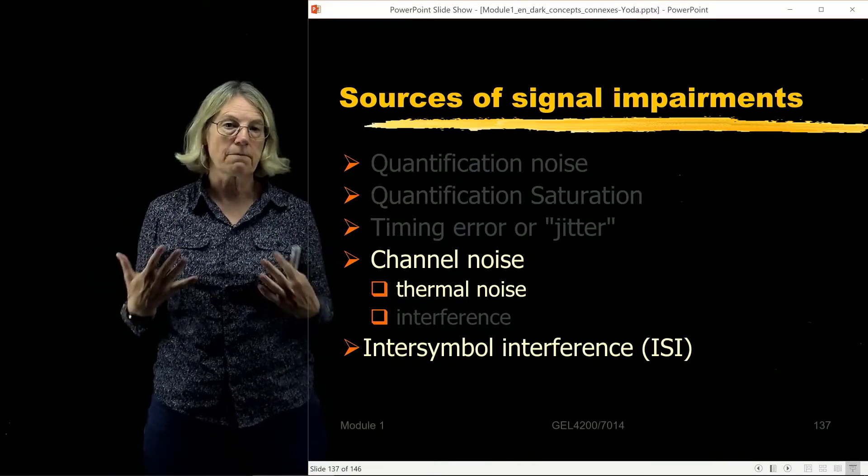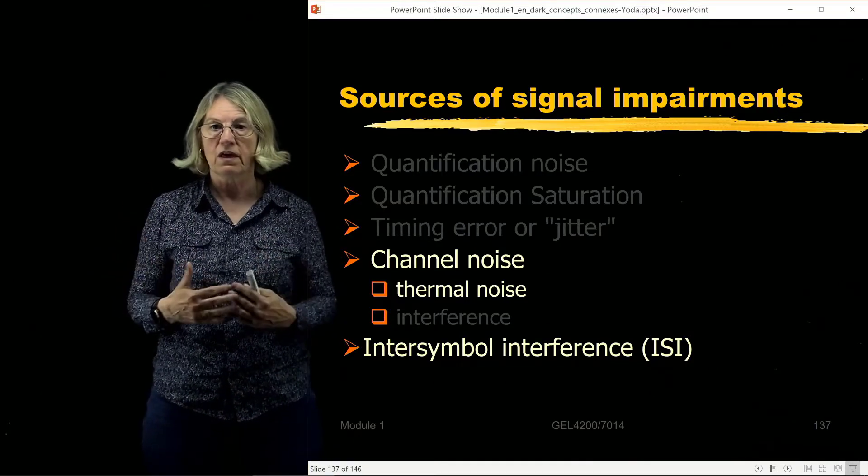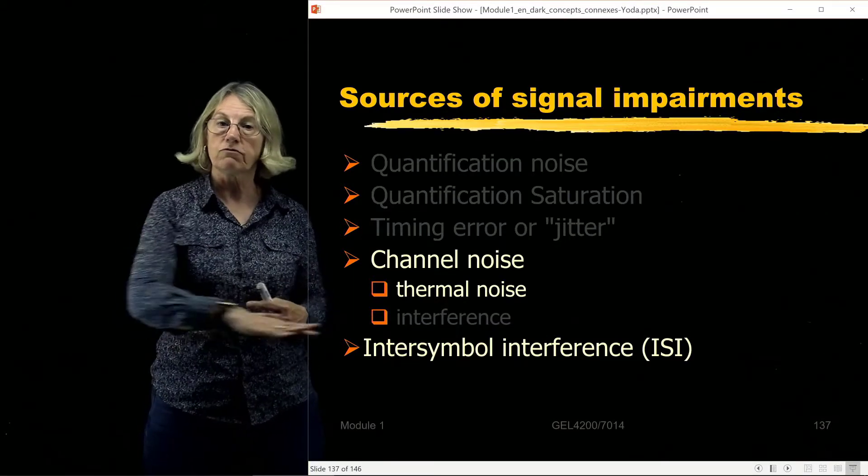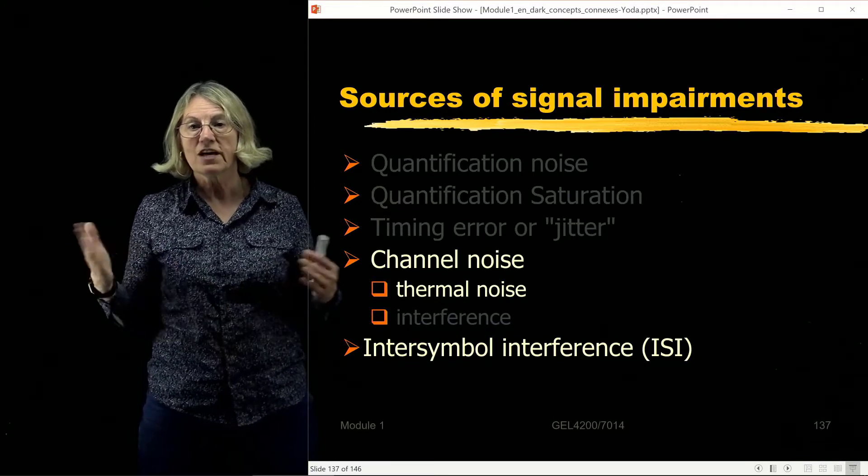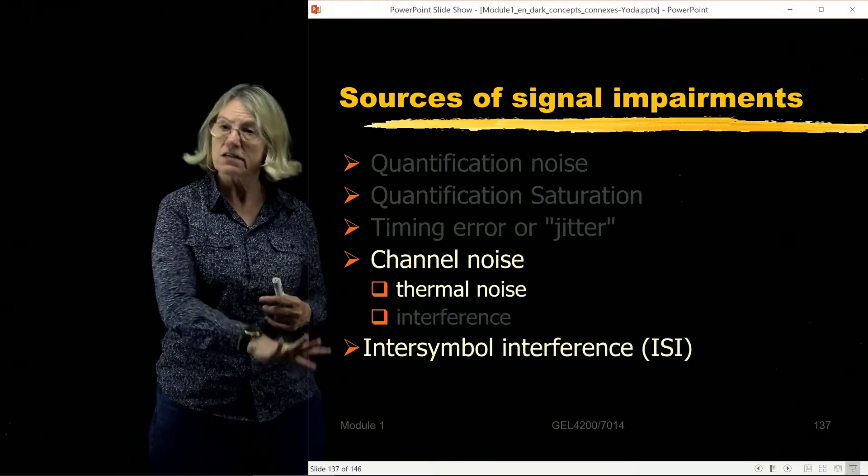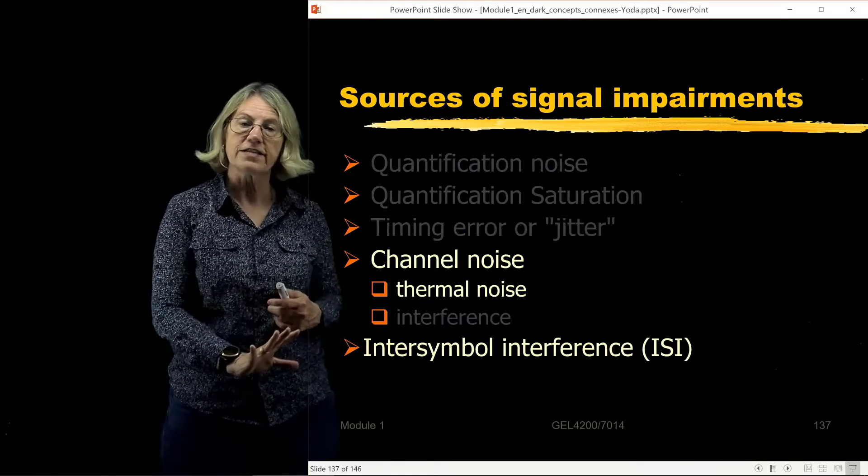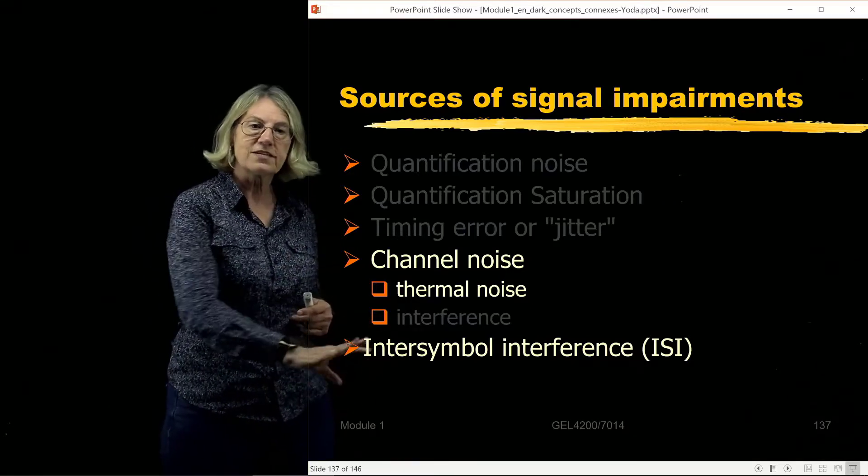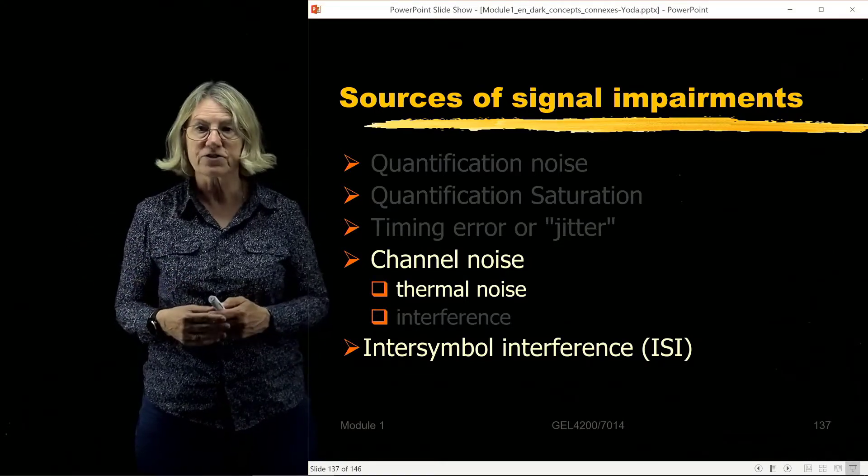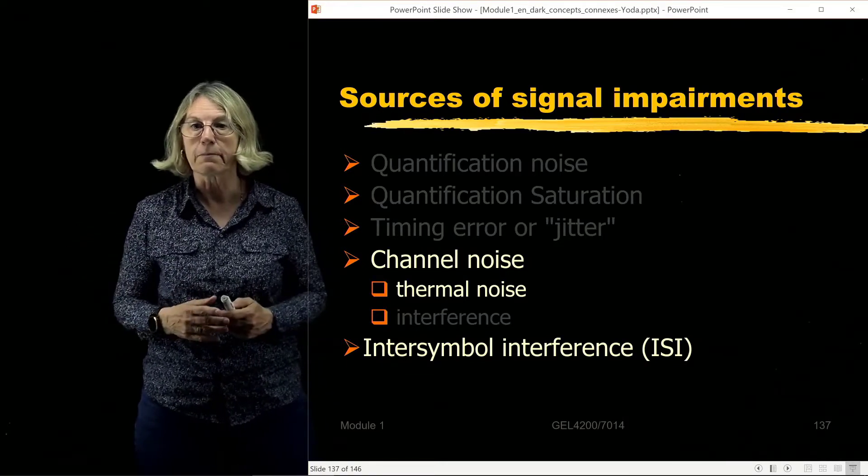The second thing that I will be returning to often in this class is this concept of inter-symbol interference. There'll be many decisions that are made about how to proceed with a communication system, and all of these could be to avoid the presence of inter-symbol interference, which is difficult to avoid. Therefore, I'm going to take a little time early on at the beginning of the class to define for you what is inter-symbol interference so that as it comes up in the class, you'll have some context for understanding why we're talking about it.